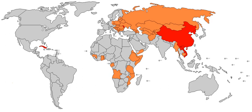In one view, every economic system represents an attempt to solve three fundamental and interdependent problems. What goods and services shall be produced and in what quantities? How shall goods and services be produced — that is, by whom and with what resources and technologies? For whom shall goods and services be produced — that is, who is to enjoy the benefits and how is the total product to be distributed among individuals and groups in the society?